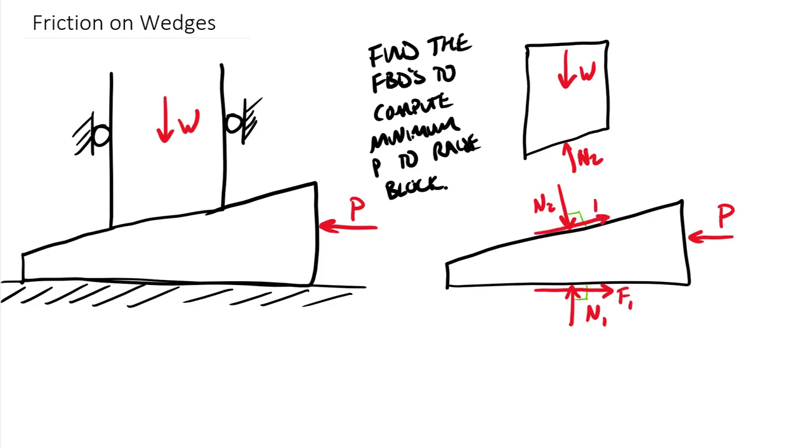This one here is going to be F2, and then equal and opposite again up to the upper block. So for the upper block here we'd have friction coming down this way, F2.